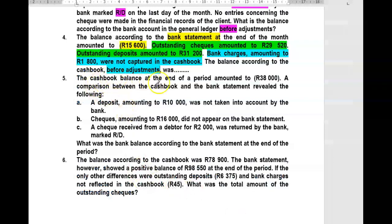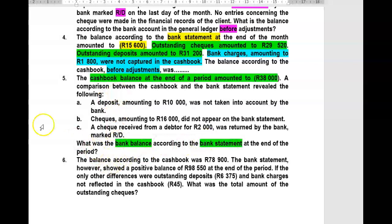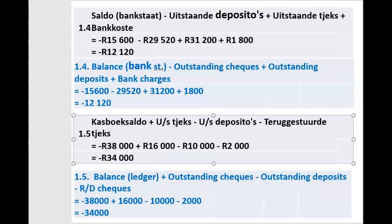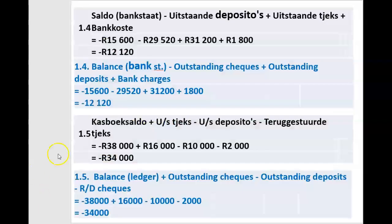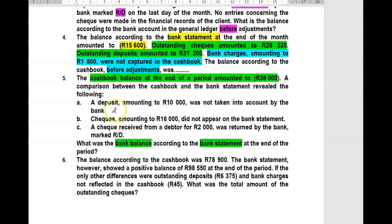The next one: the cashbook balance at the end of the period amounted to minus 38,000 Rand — an overdrawn balance. A comparison between the cashbook and the bank statement revealed the following. We're going to start with the bank ledger account balance. An outstanding deposit already included in the GL account increased that balance, so to eliminate it, we subtract it. We start with the overdrawn cashbook balance of minus 38,000 Rand.